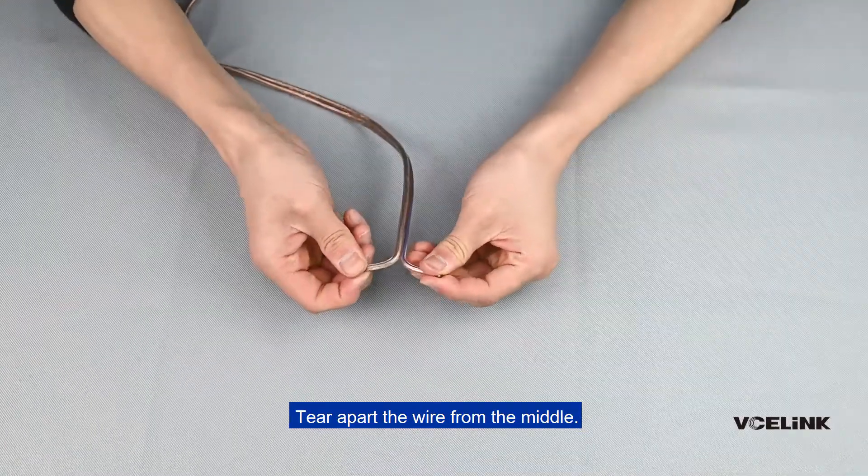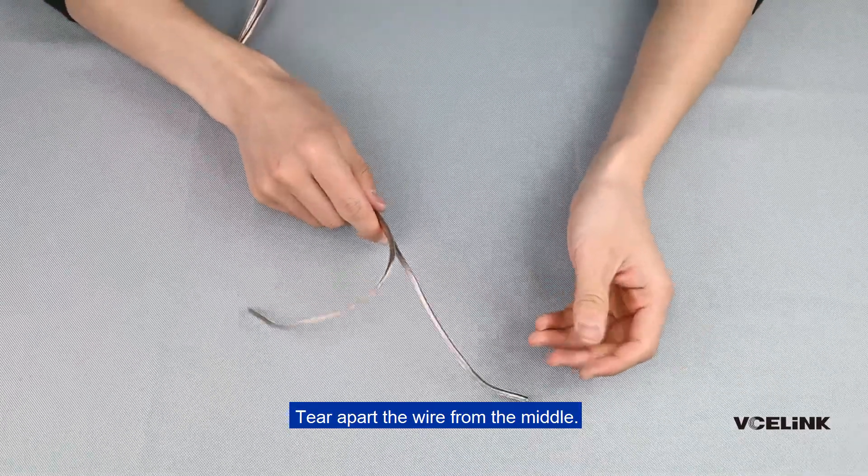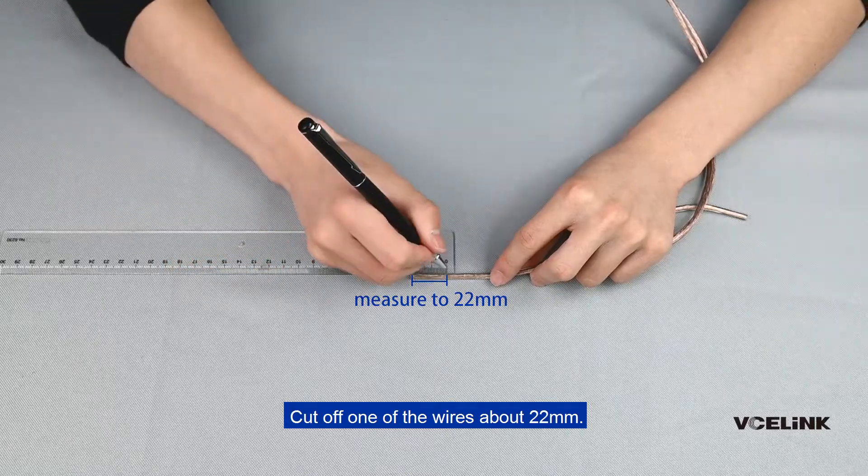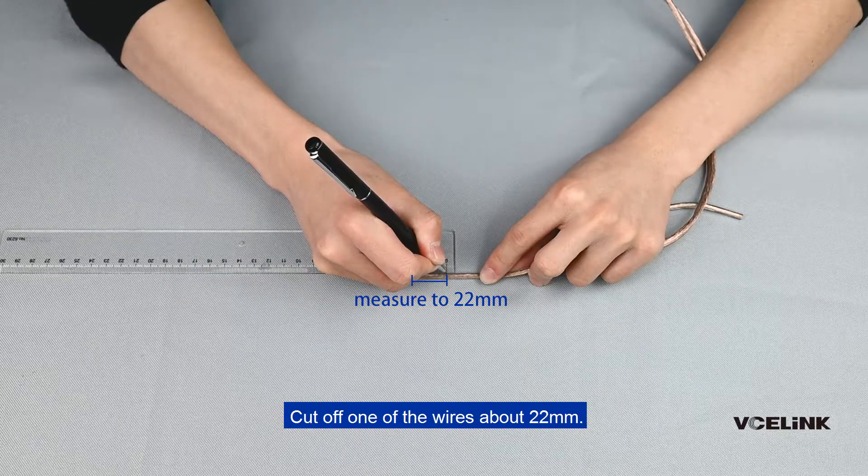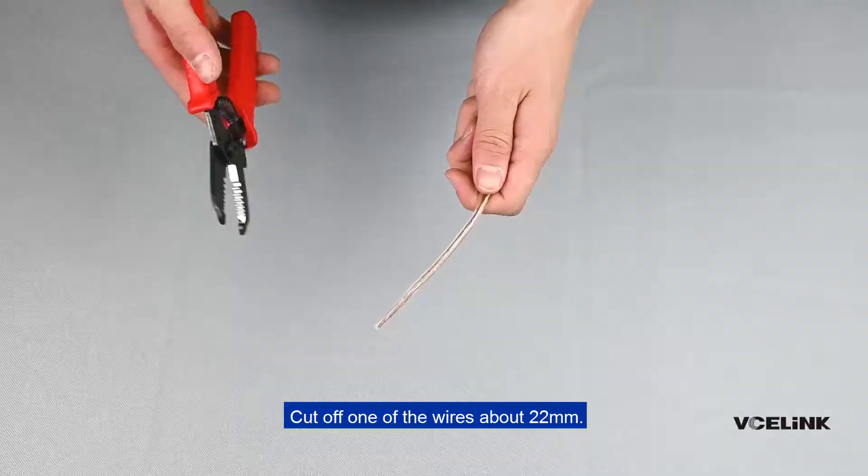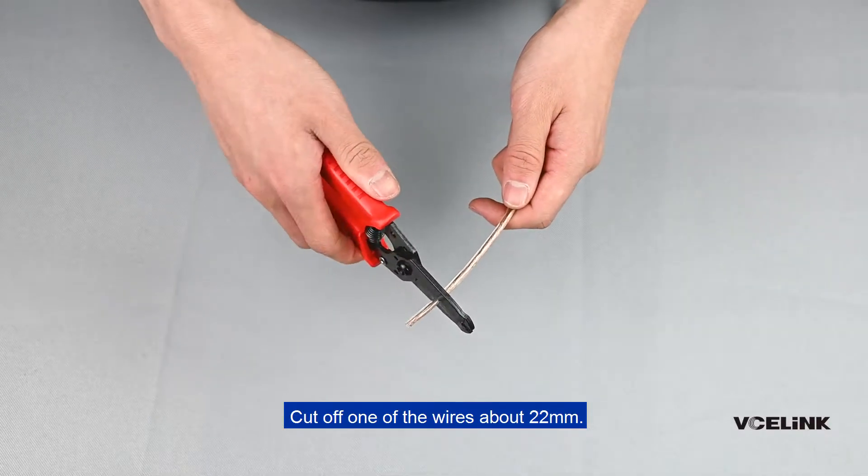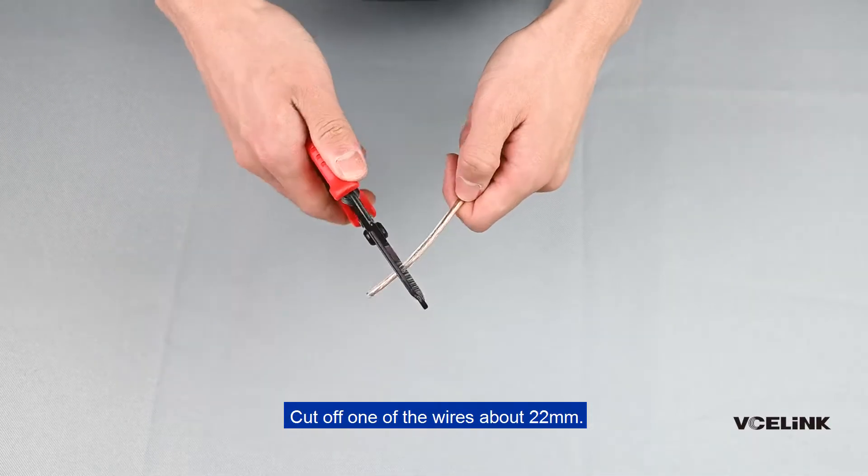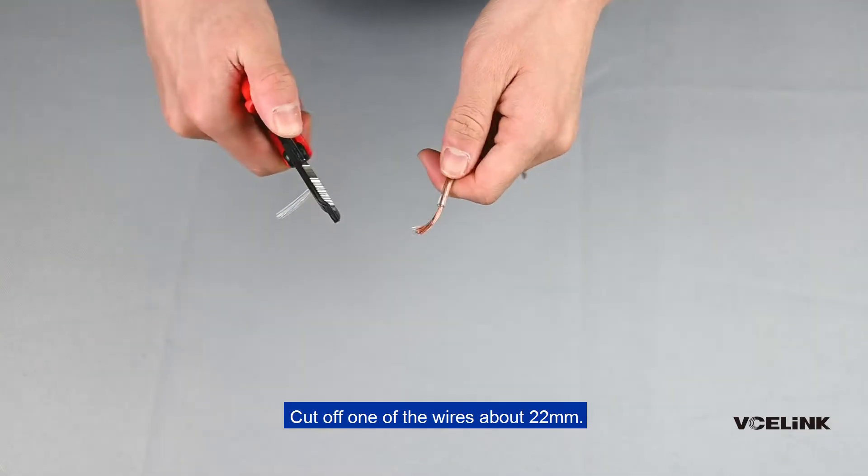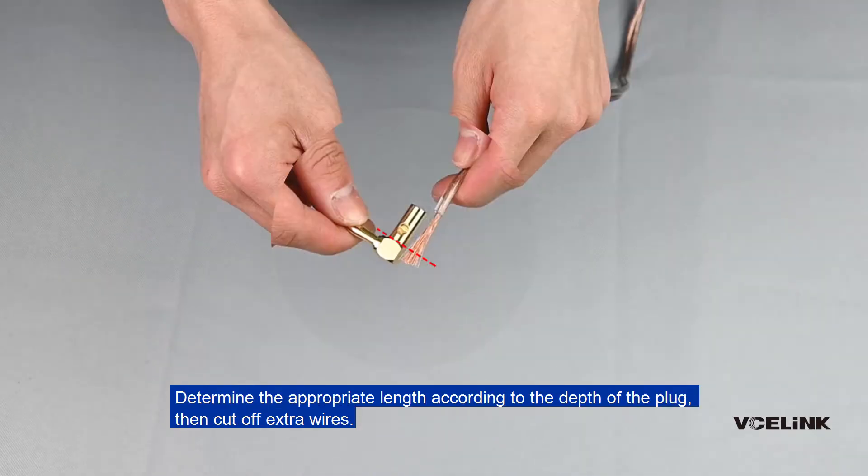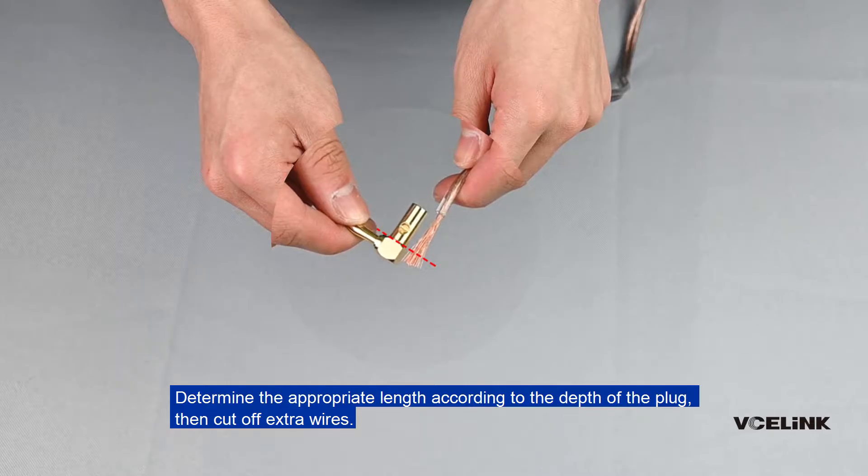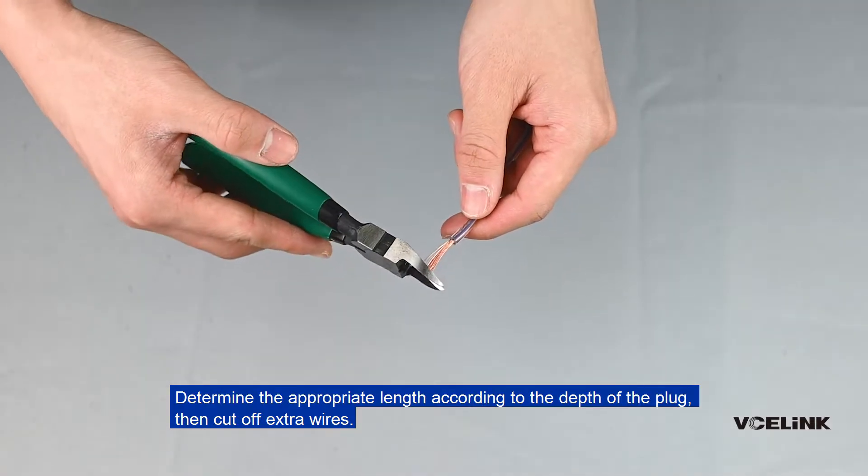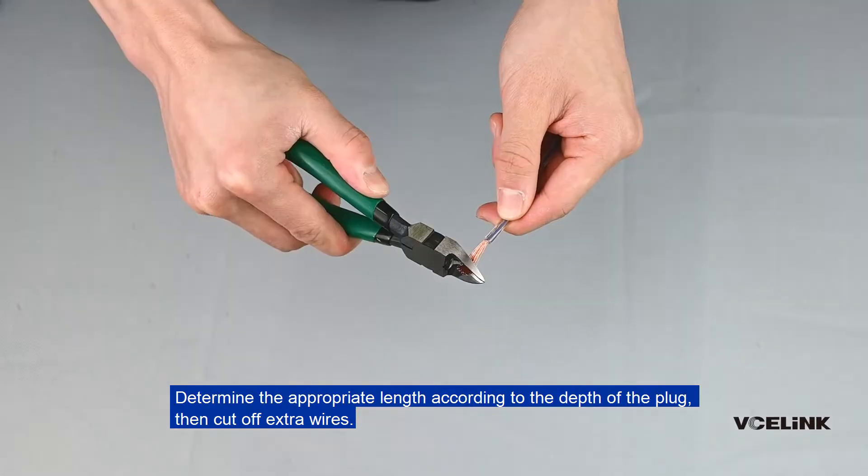Tear apart the wire from the middle. Cut off one of the wires about 22 mm. Determine the appropriate length according to the depth of the plug, then cut off the extra wires.